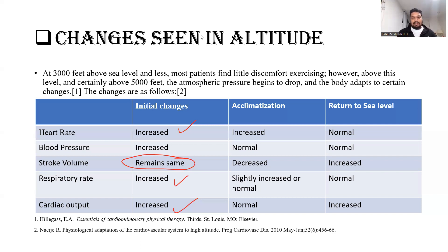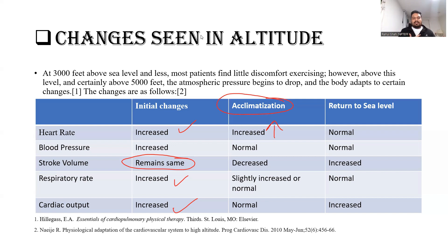After acclimatization — living in the mountains for more than three weeks — you're used to it but maybe getting homesick: missing city noise, traffic, and people. You're still active on the mountain so heart rate remains higher, but blood pressure returns to normal since you're no longer as excited. Your heart is a little saddened from homesickness, so stroke volume is now decreased. Respiratory rate may remain the same, and cardiac output has also returned to normal since this is now a normal situation for you.